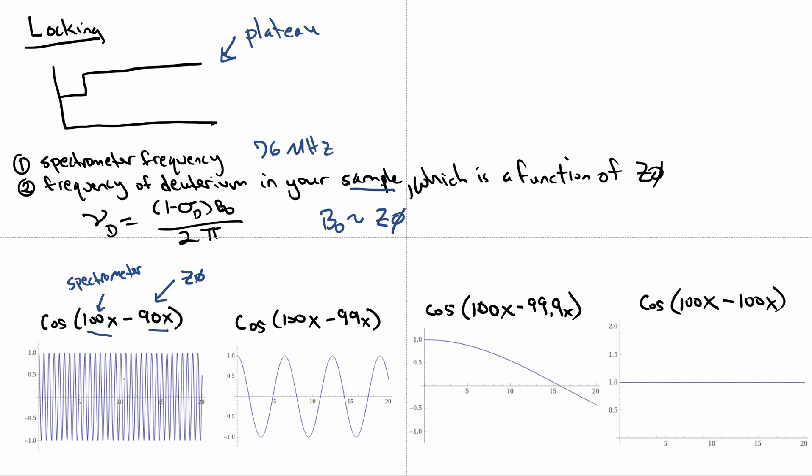If we're far away, so it's 100 minus 90, then we get a high frequency sine wave. And as we move closer, that frequency went down, and as we get even closer, so now the difference is very tiny, it's even lower. And then when we're right at the right frequency, the spectrometer frequency and your deuterium frequency, so this is the spectrometer and this is deuterium, and then it's just basically a constant value, which is our plateau. So that's really where it's coming from.